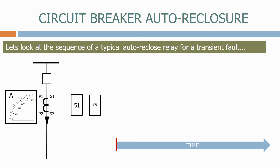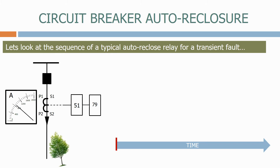Let's now close the circuit breaker. As soon as the circuit breaker closes, the current on the feeder will increase. Let's now simulate our transient fault on the feeder. The current will now increase due to the fault and the protection relay will pick up.